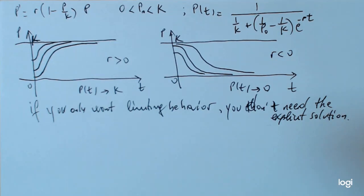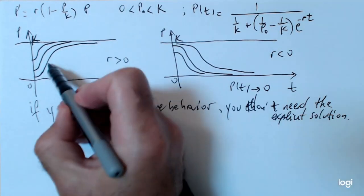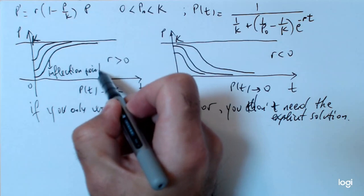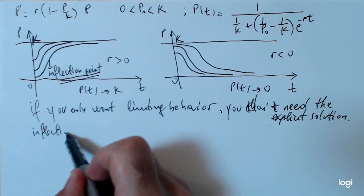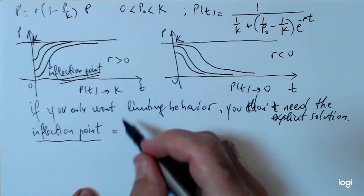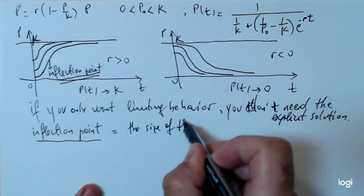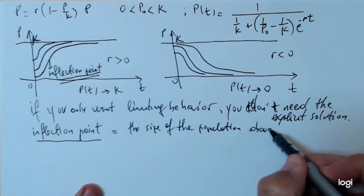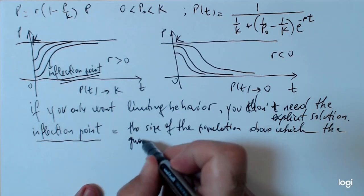So, one thing I want to point out again is the fact that the interpretation of this inflection point is rather important because if you think about it signifies the population level at which the limited resources start to have an effect on the population growth. So, this inflection point is the size of the population above which the growth slows down.